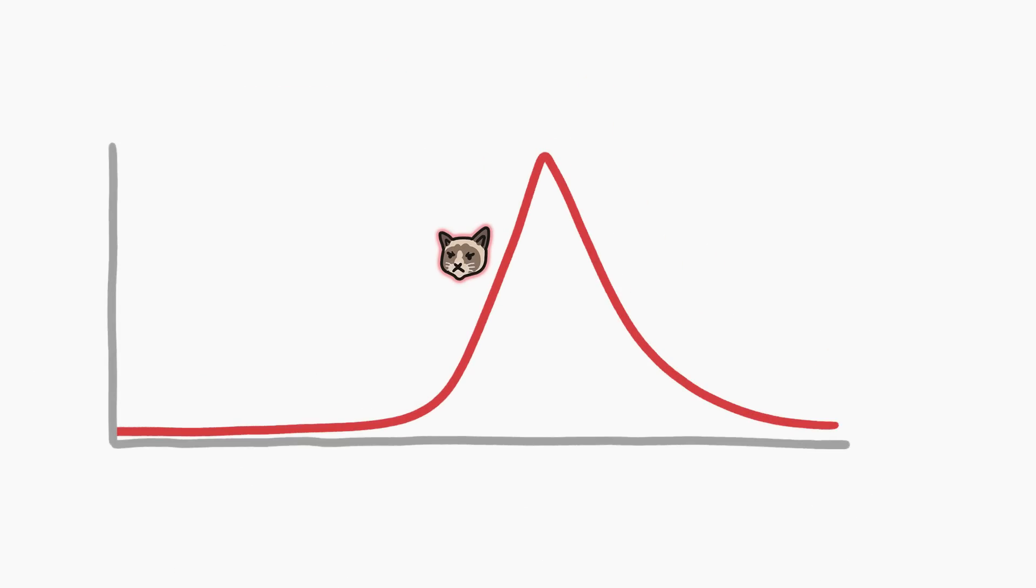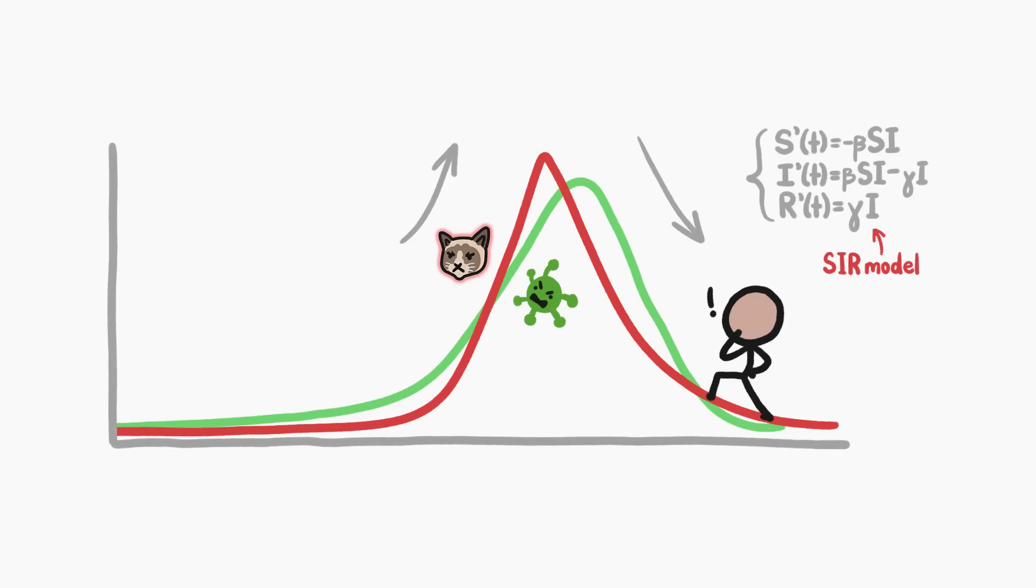Because infectious diseases and memes follow such a similar pattern, typically a steep climb followed by a similar decline, we can use the same math to describe the pattern in either case, or even to model whether something will go viral in the first place.